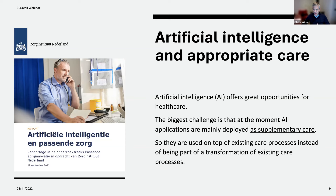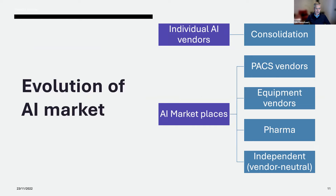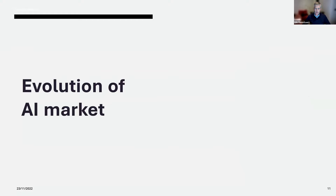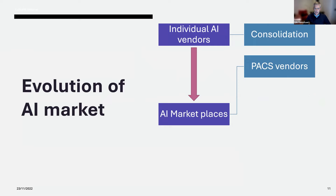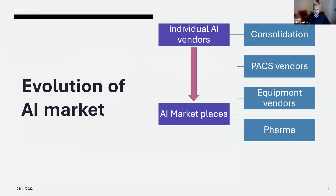What is the evolution of the AI market? In the beginning we had mainly individual AI vendors, but now this is shifting to marketplaces. Individual AI vendors are consolidating — their number is not growing anymore, and they are collaborating. We see separate marketplaces launched by PACS vendors or equipment vendors, and the pharmaceutical industry is jumping in this market too. Of course, we also have vendor-neutral or independent platforms.